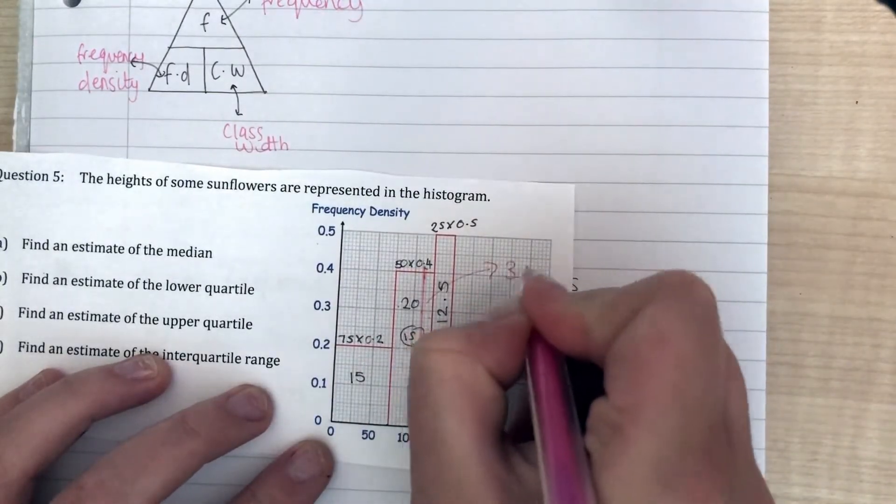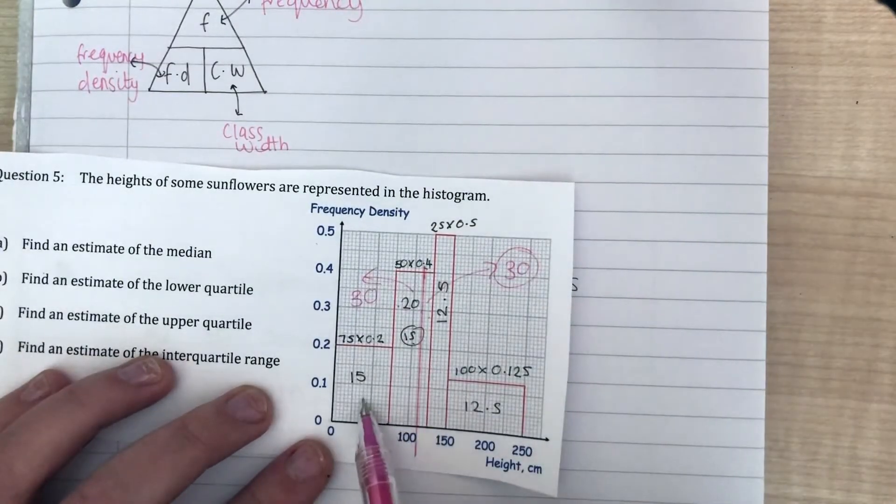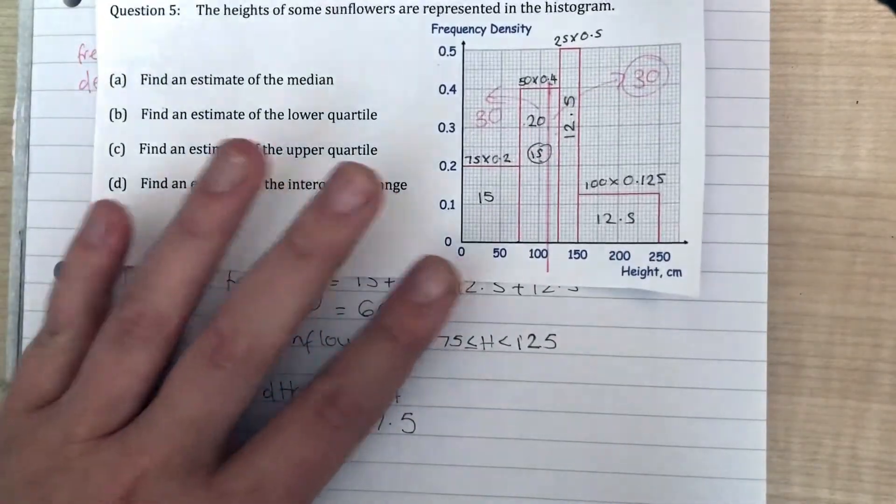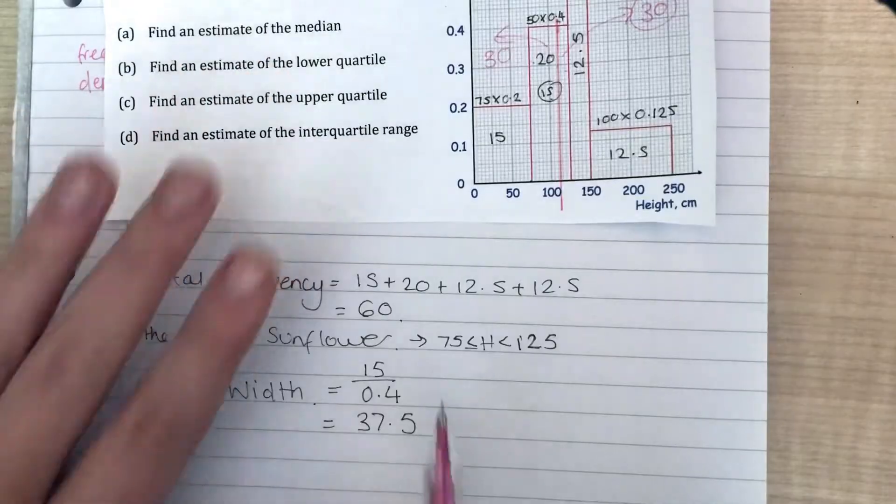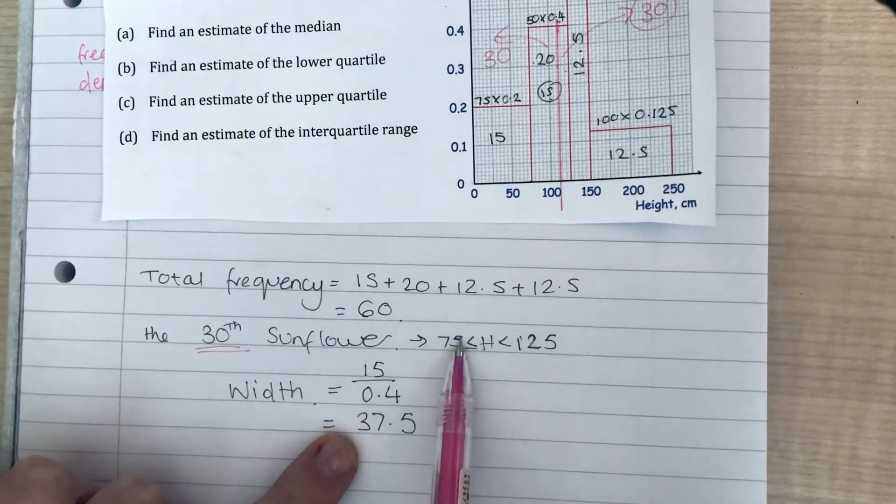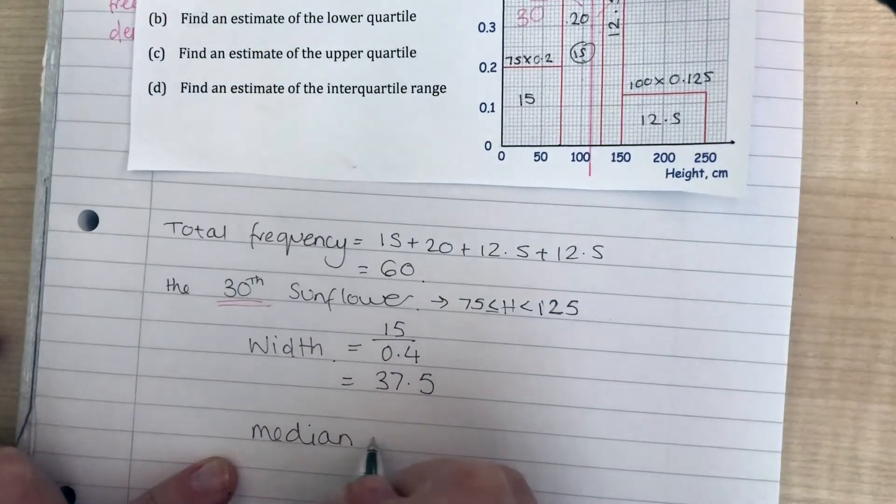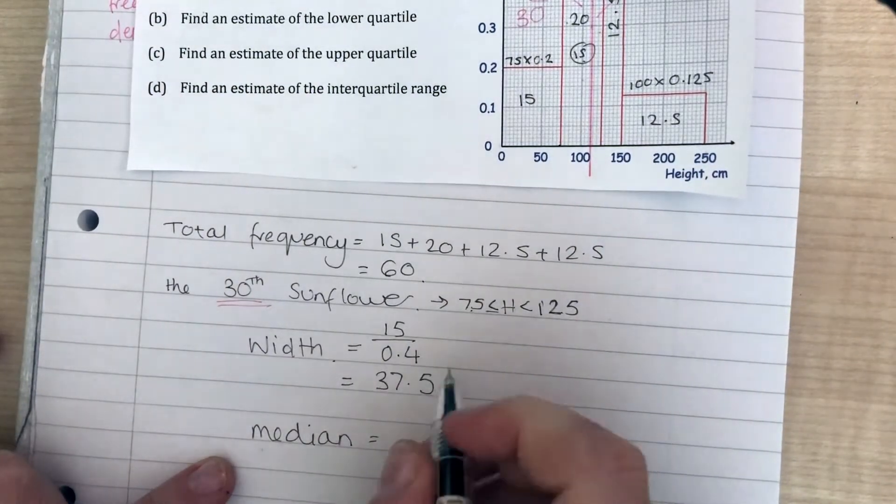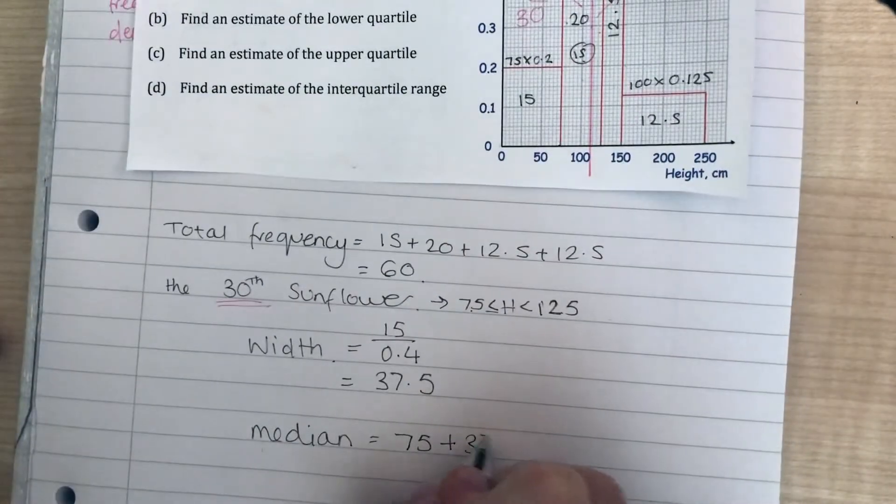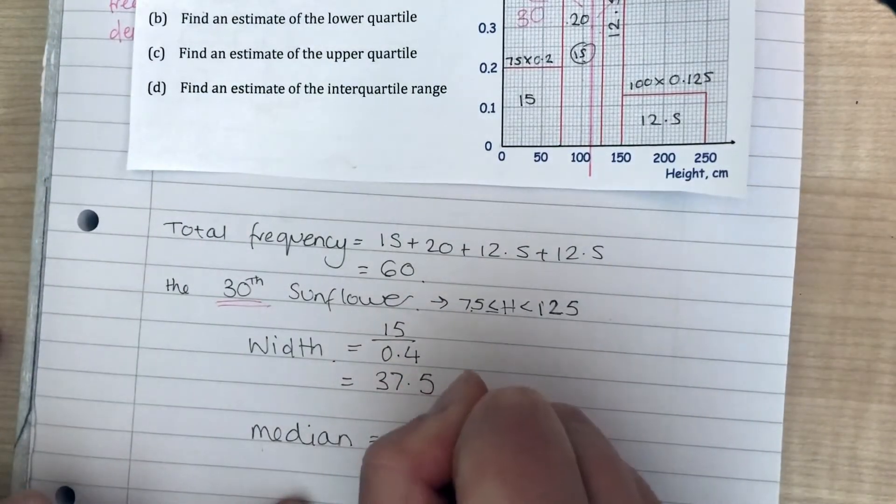If I've done that correctly, I should have on this side a total of 30 things and on this side a total of 30 things. 15 plus 15 is 30, and 12.5 plus 5 plus 12.5 also gives me 30, so that's spot on. Now to work up my actual estimate, the lower bit of the bar is 75 centimeters, so my median is going to be 75 plus this width that we've worked out, which gives me a median of 112.5 centimeters. We're going to use an approximately sign because it's not an accurate estimate since it's grouped data.